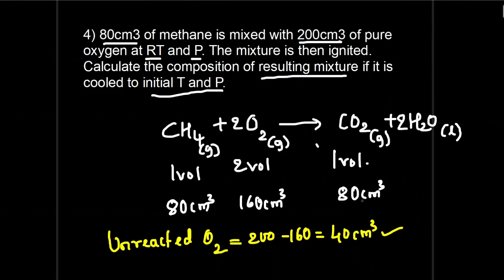Write the full working as shown in the first example to get full marks. The resultant mixture contains unreacted oxygen = 40 cm³ and CO2 formed = 80 cm³. Don't consider water as it is liquid.